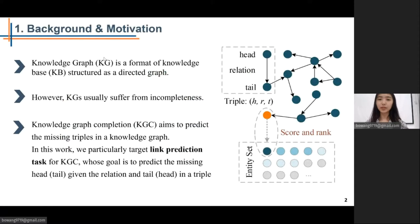Knowledge graph is a ubiquitous format of knowledge base. It is structured as a directed graph whose vertices and edges represent entities and their relations. It is usually represented as a set of triples in the form of head entity, relation, tail entity, or HRT for short. KGs and supporting knowledge play significant roles across a wide range of natural language processing tasks. However, human-created knowledge graphs usually suffer from incompleteness, inevitably limiting their practical applications. To mitigate this issue, knowledge graph completion aims to predict the missing triples in a knowledge graph. In this work, we particularly target link prediction tasks for KGC, whose goal is to predict the missing tail or head from entity sets, given the relation and head or tail in a triple to make a new triple plausible in KG.